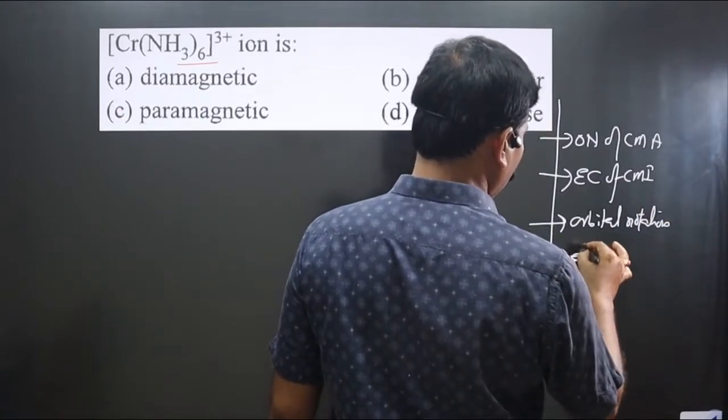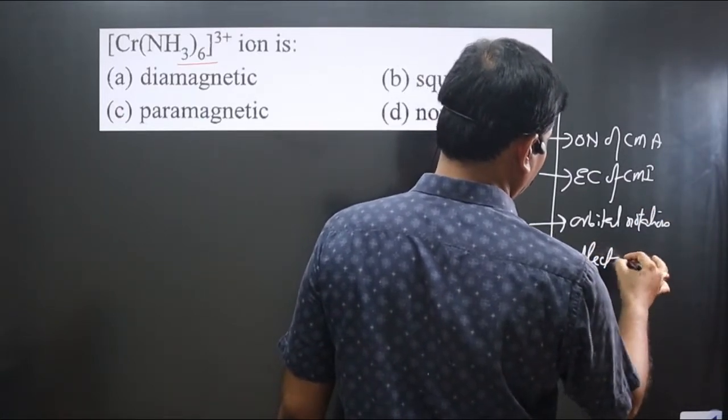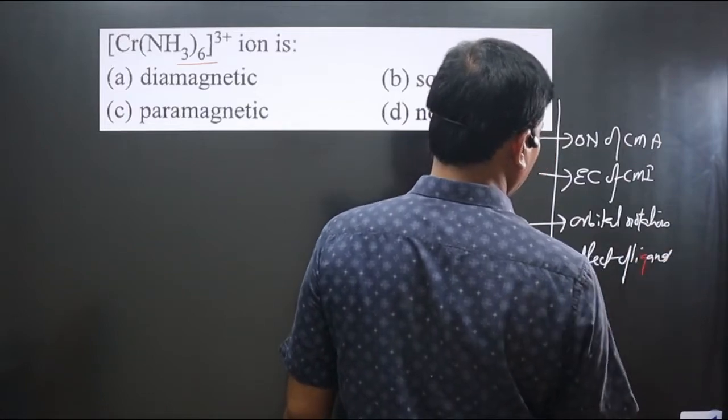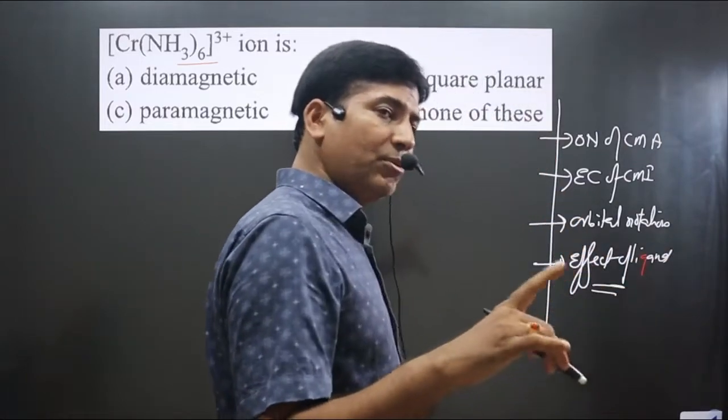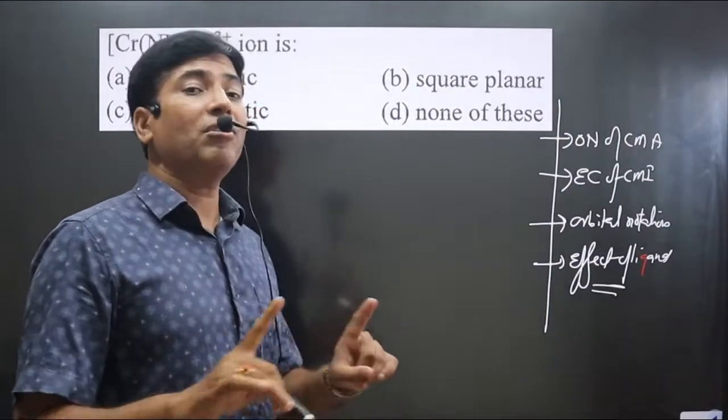And in the last step, you should consider the effect of the ligand. Whether we have strong field ligand or weak field ligand. Strong field ligand causes pairing of electrons and we do not follow Hund's rule.